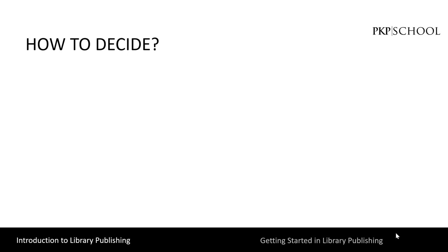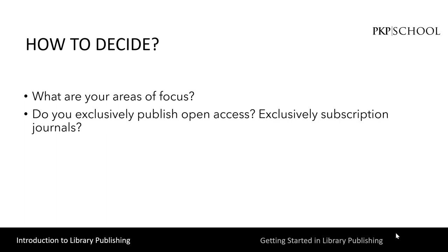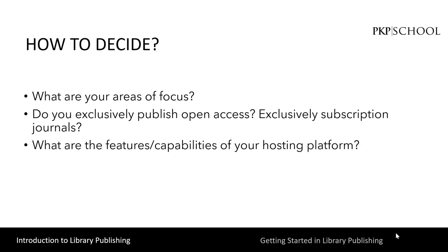It's helpful to think about the following questions. First, what are your areas of focus? So disciplines, geographical regions, types of media, etc. Also, do you publish exclusively open access journals, or exclusively subscription journals, or perhaps a combination of open access and subscription? What are the features and capabilities of your hosting platform? In what format can you publish — for example, HTML, PDF, etc. — and what file types can you accept, such as videos or images?